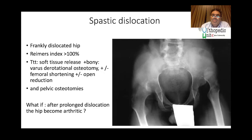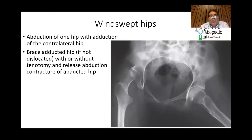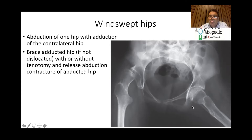For late-presenting neglected hip dislocation with arthritis, we proceed to femoral head excision. Always remember that when you have a dislocation on one side, examine the other side. If there is a persistent abduction deformity on the contralateral side, it must be corrected because it is the most common cause of recurrence of hip dislocation. Fixed abduction on the contralateral side should be corrected simultaneously with relocation of the neglected hip to prevent re-dislocation.